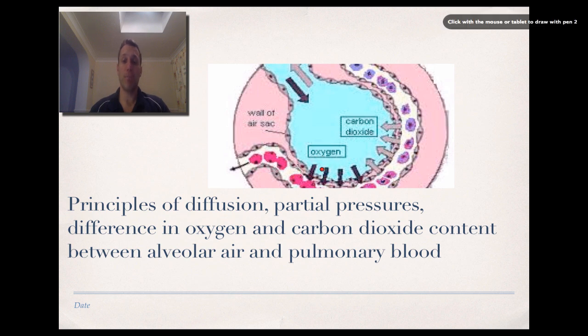So as I've just said, why is it that oxygen enters the bloodstream from the alveoli? Why is it that carbon dioxide leaves the bloodstream into the alveoli and then is exhaled? The principles we need to know are that of diffusion and partial pressure, and then why differences in the content between air and blood mean that diffusion will occur.